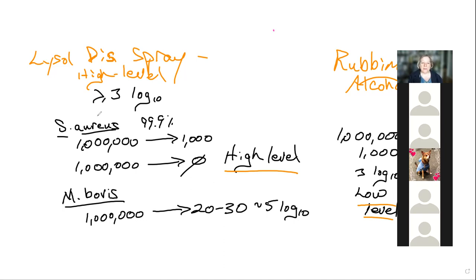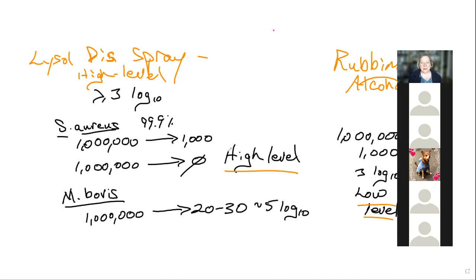How much above a three-log reduction you can achieve determines whether you're a high, intermediate, or low-level disinfectant. Shall we move on to quats — quaternary ammonium chloride?